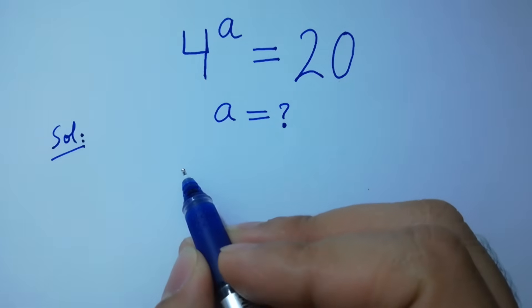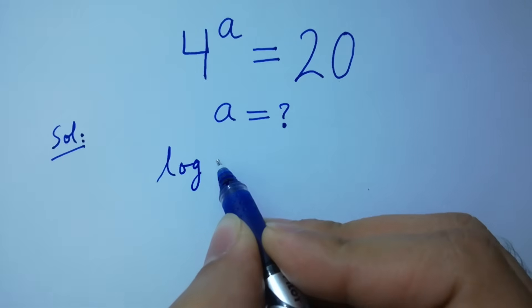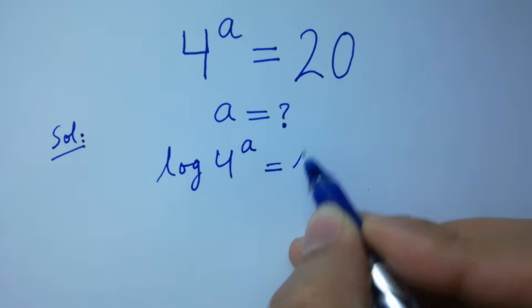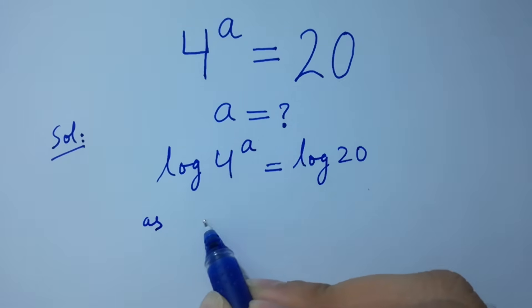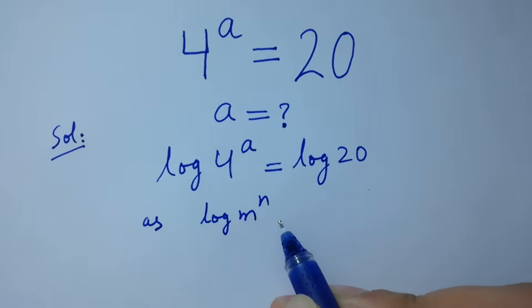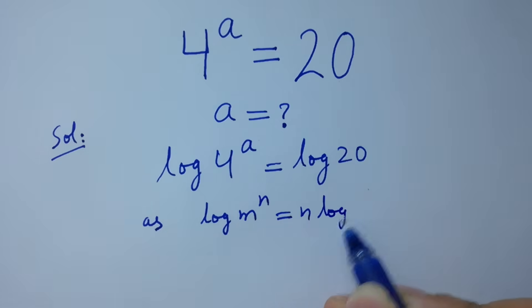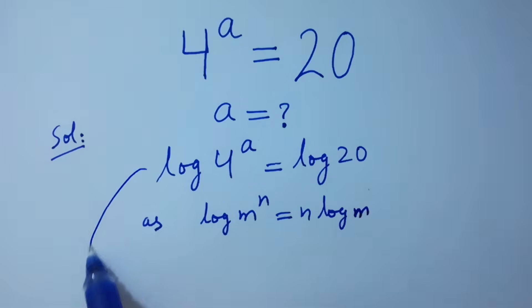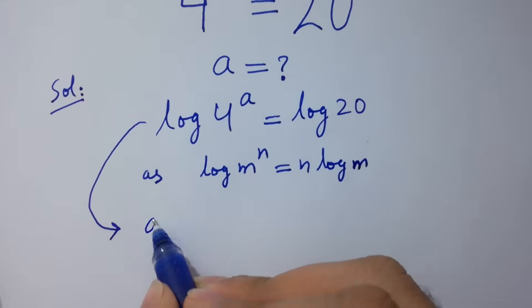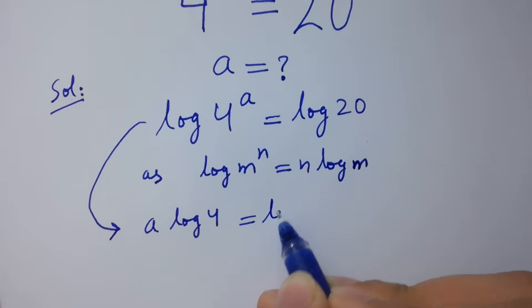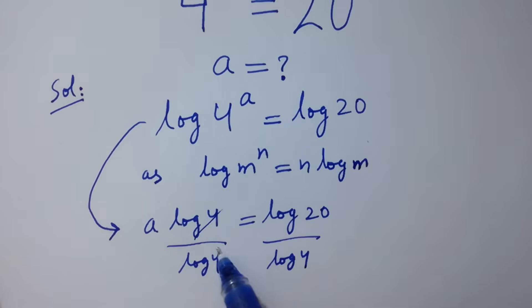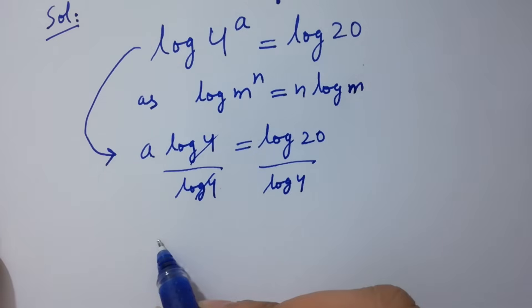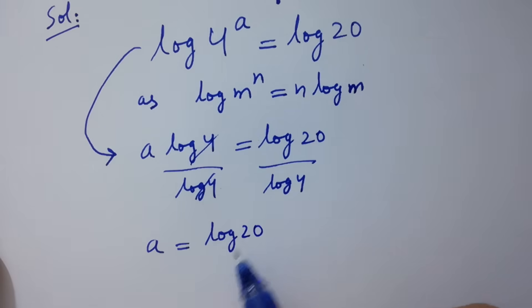Take log on both sides. Log 4 to the power a equals log 20. As log m to the power n equals n log m, it will be a log 4 equals log 20. Divide by log 4 on both sides — log 4 and log 4 cancel. So a equals log 20 over log 4.